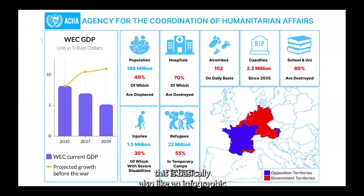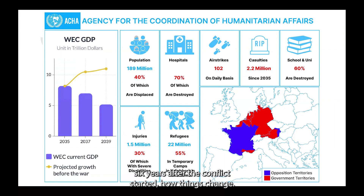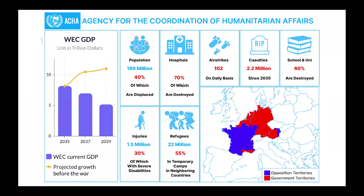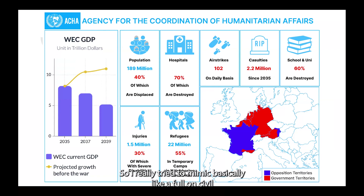This is also an infographic that I show people, set six years after the conflict started — how things change: the population of the country, how many hospitals were destroyed, airstrikes. I really try to mimic a full-on civil war happening within this future Europe.